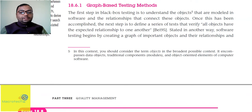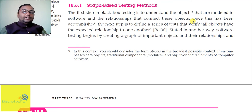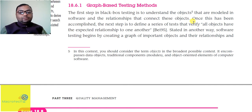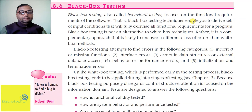Pehli technique hai graph-based test methods. In the first step of black box testing, we understand the objects modeled in the software and the relationships connecting these objects. Once accomplished, the next step is to define a series of tests to verify that all objects have been properly modeled — koi object reh to nahi gaya, aur unka aapas mein jo relationship hai woh sahi tarike se capture ho raha hai.